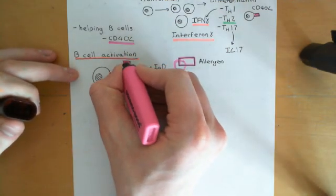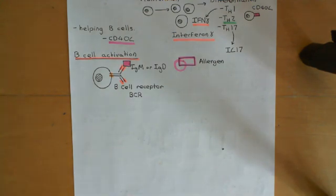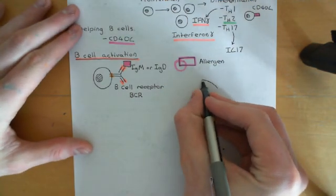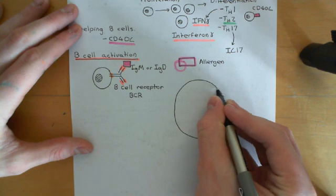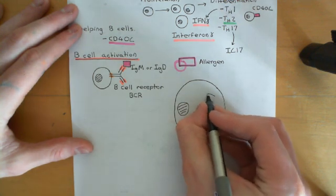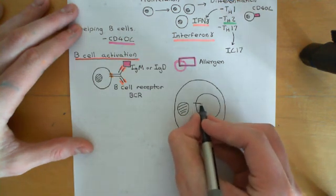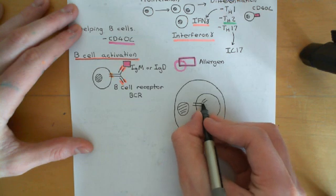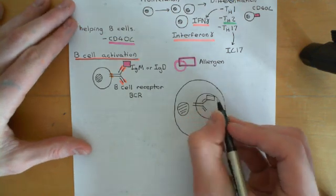The allergen is coming in and it's going to bind to the variable region of the B-cell receptor, directed against a certain epitope of that allergen. Following this, the B-cell receptor is going to be internalised with that allergen molecule bound to it. So here, this is our B-cell shown larger — here is its nucleus — and the B-cell receptor with the allergen molecule attached to it is now going to be internalised. Here's the B-cell receptor; it's been internalised and it's got the allergen molecule bound to it.